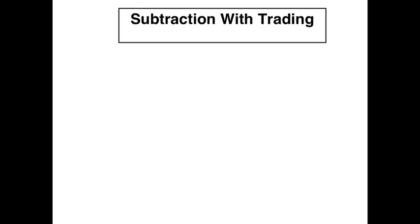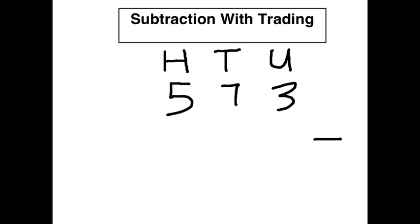So hopefully now you're getting the hang of this. Here's a sum for you. Let's put our hundreds, tens, and units up first. Let's put a sum: 573 minus 296. Press pause now and have a go using those new skills of subtraction with trading that you've learned. Come back and check your answer in just a moment.